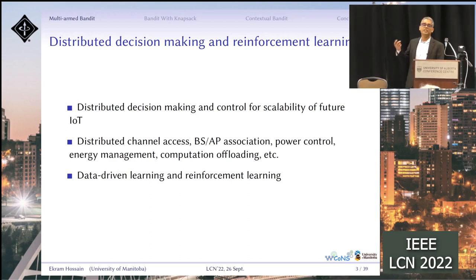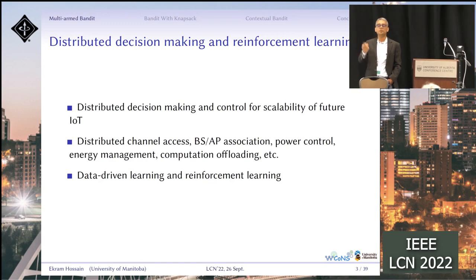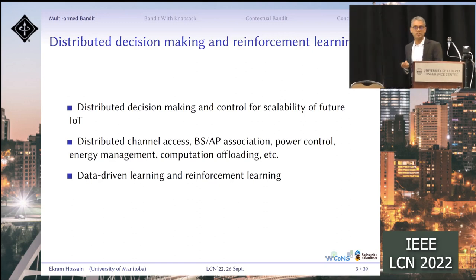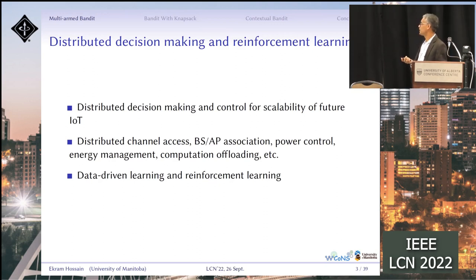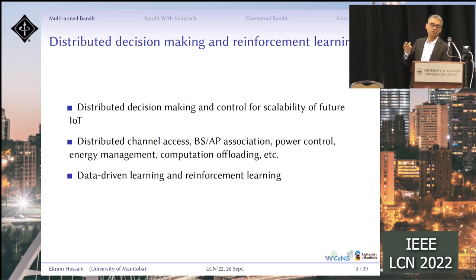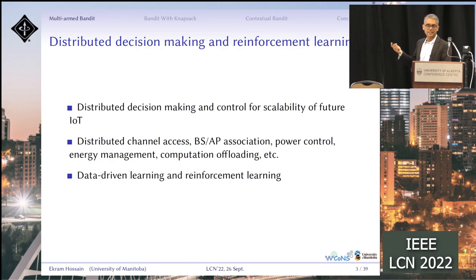Also, for example, base station association: if you have a geographical area with a lot of base stations and access points, a device needs to make a decision on which access point it should be associated with. Power control problems can also be distributed — each device can make a decision on how much power to use. In the context of edge computing, a device may need to make a decision by itself whether to offload or not, how much to offload, and to which server to offload. For distributed decision-making, data-driven techniques like machine learning will be suitable, and this is where multi-arm bandit models can help.